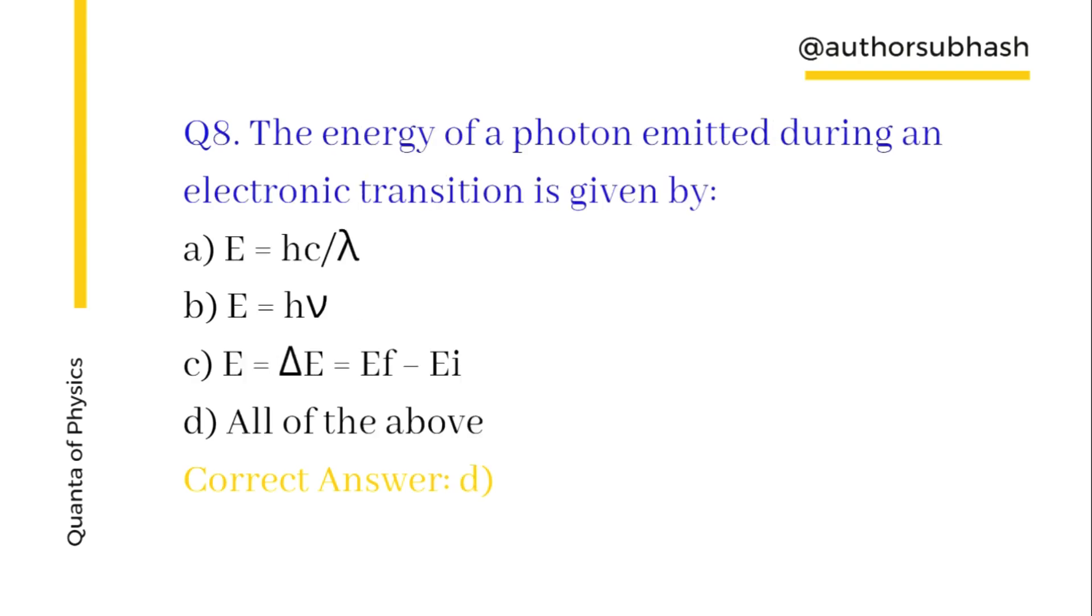The energy of a photon emitted during an electronic transition is equal to hc/λ, or E = hν, or ΔE = Ef - Ei. So all of the above are correct.